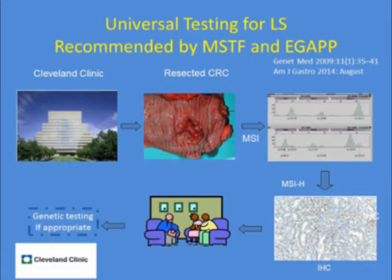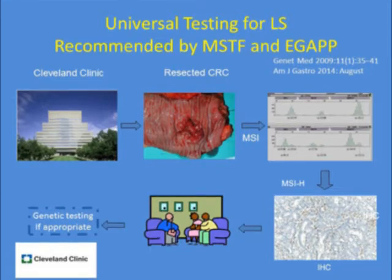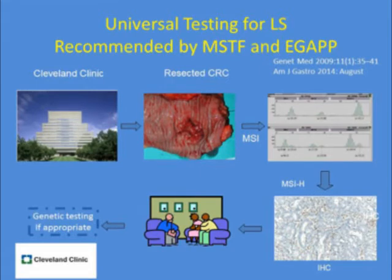Regarding universal testing for Lynch syndrome: multi-society task force guidelines were recently published in GIE and Gastroenterology, and the CDC has convened a work group to evaluate genomics use in practice. Both bodies recommend that universal testing be considered — that is, testing all colorectal cancers for evidence of Lynch syndrome.